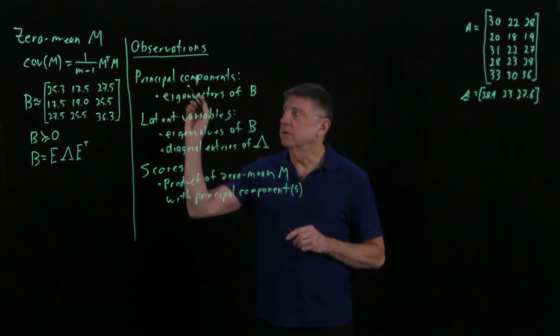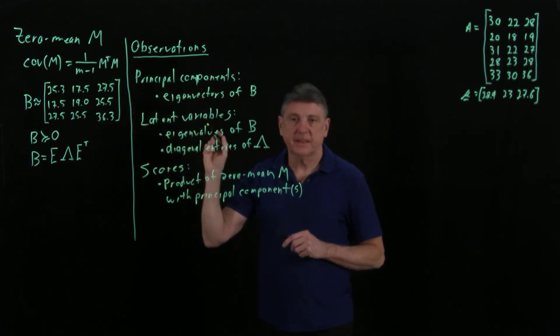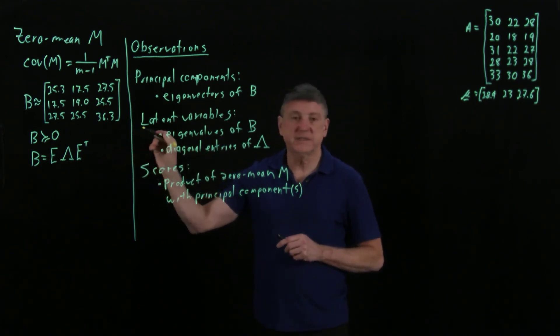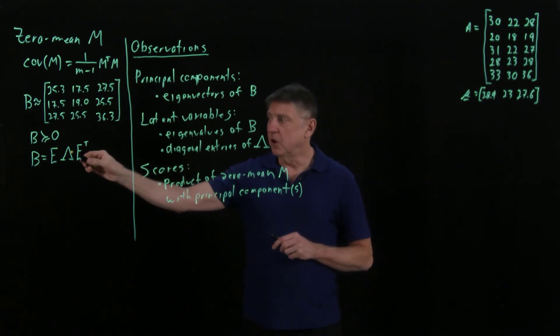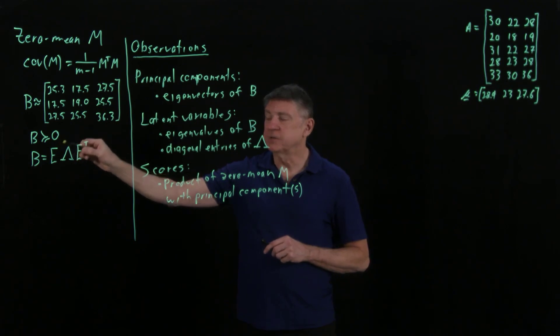This is the idea behind principal components analysis: we look at the covariance matrix of the data, which tells us a certain amount. But the eigendecomposition tells us much, much more, because the dominant eigenvalue is the main way that the matrix varies.